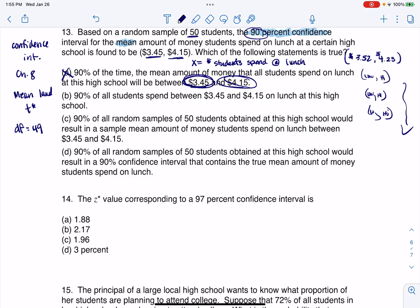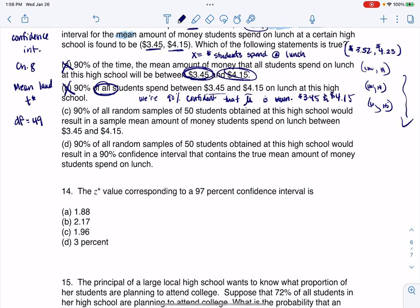Option B says 90% of all students spend between $3.45 and $4.15. No, that's not correct. What we're saying is that we're 90% confident the mean mu is between those numbers. We're not saying that all students spend that much. We think the average student spends that much. There's definitely going to be students that don't spend any money on lunch because they bring their own lunch, and then there's going to be some that spend more than that. We're looking for the average student. So I would disagree with this statement.